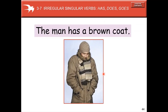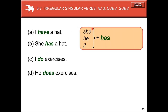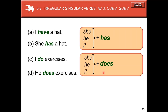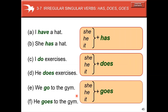Now we have irregular singular verbs: 'has,' 'does,' and 'goes.' Instead of 'halve,' we say 'has.' For example: 'The man has a brown coat,' 'I have a hat,' 'She has a cap.' For 'do,' the third person singular is 'does': 'She does this exercise.' For 'go,' it becomes 'goes': 'He goes to the gym.' Use 'goes' (G-O-E-S) for she, he, and it.